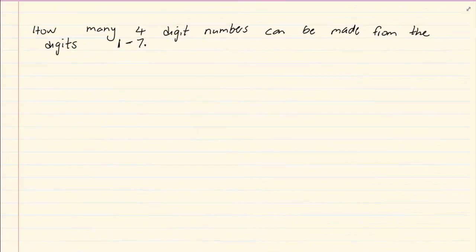Okay let us take the next example. It says how many four digit numbers can be made from the digits one to seven. Now we know obviously there's a change so it's a permutation.